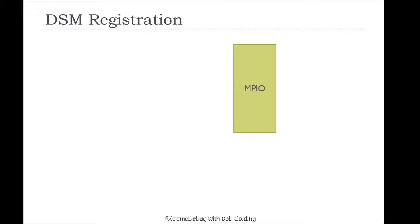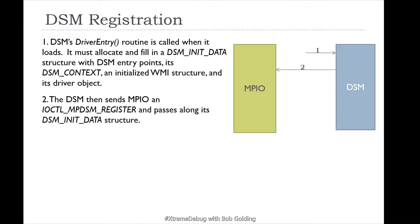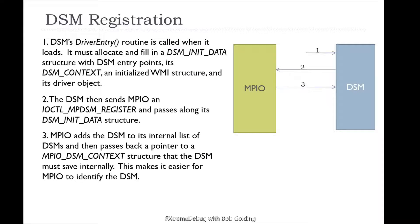Next we're going to talk about DSM registration. All DSMs have to register themselves with MPIO so they can be called when a new device supported by MPIO arrives. When the DSM's driver entry routine is called during initialization, it must allocate the DSM data structure with the DSM entry points or callbacks, its DSM context, initialize WMI structure, and its driver object. The DSM sends this information to MPIO with an IOCTL MPDSM register, passing along the DSM data structure. MPIO adds the DSM to its internal list and passes back a pointer to a DSM context structure to identify the DSM.